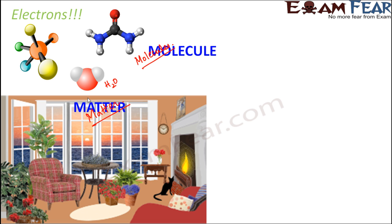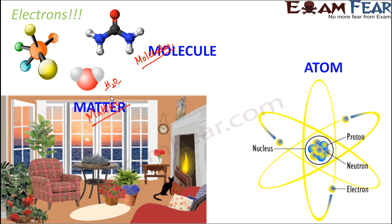Now when you look at the composition of molecules, you see that molecules are made up of atoms. So each molecule — when you think of the water molecule — you see that the water molecule in turn is made up of atoms, that is hydrogen and oxygen. These are the atoms of which the molecules are made up of. And finally, when you look at the composition of an atom, you see that an atom is made up of three types of particles, and those three types of particles are proton, neutron, and electron.